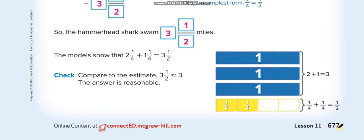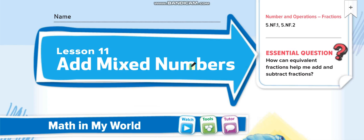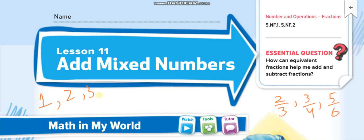First of all, you have to understand what mixed numbers are. If we write numbers like 1, 2, 3, these are whole numbers — complete numbers. If we write numbers as fractions like 2/3, 3/4, 5/6, these are fractions — incomplete numbers.